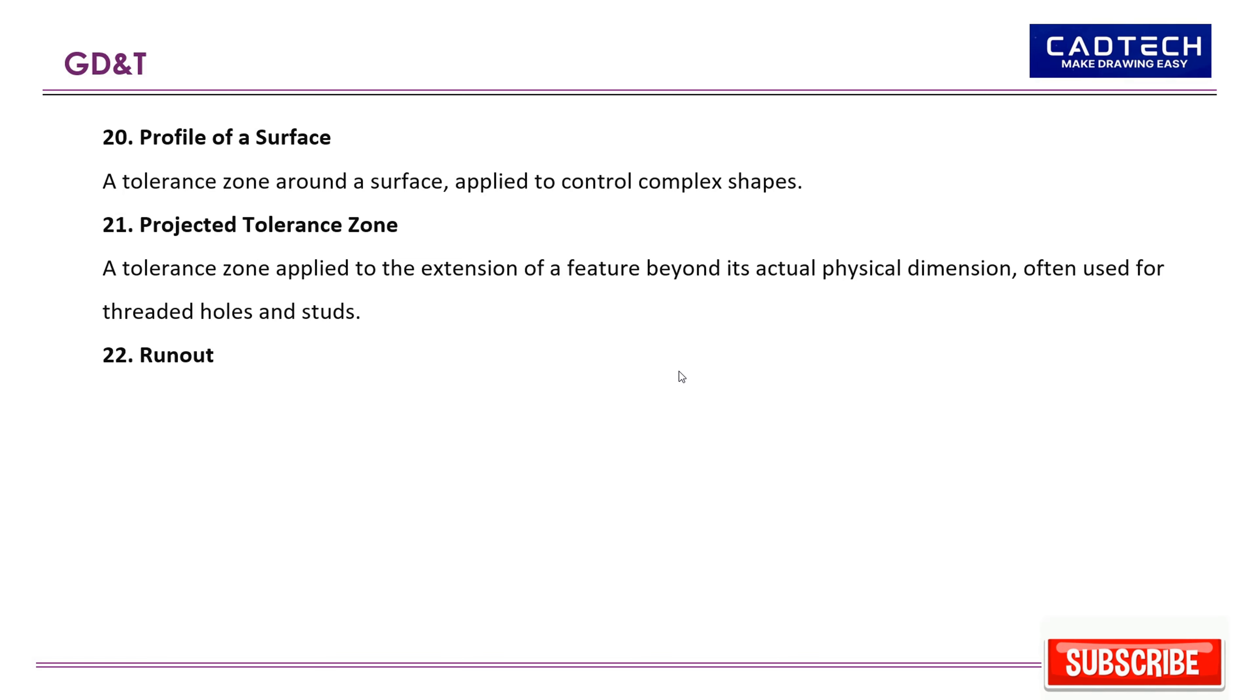22. Runout: The composite deviation from the desired form, orientation, and location of a part feature as the part is rotated 360 degrees about a datum axis. It includes circular and total runout.